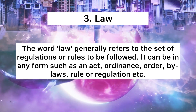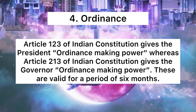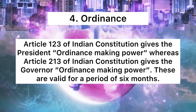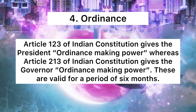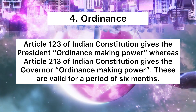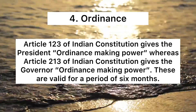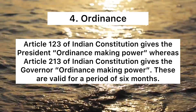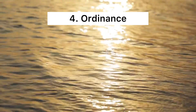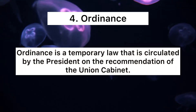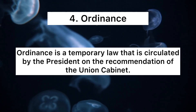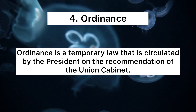The next one is Ordinance. Article 123 of the Indian Constitution gives the President ordinance-making power, whereas Article 213 gives the Governor ordinance-making power. These are valid for a period of six months. An Ordinance is a temporary law that is circulated by the President on the recommendation of the Union Cabinet.